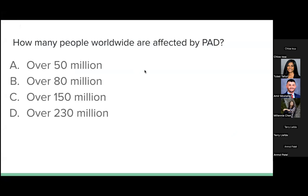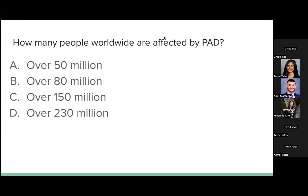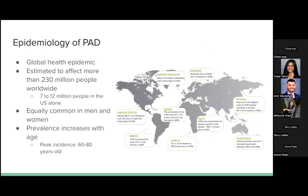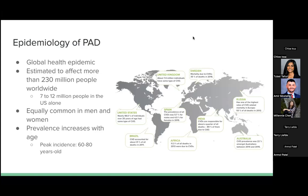First, a question for the audience: how many people do you think worldwide are affected by PAD? PAD is a significant global health issue affecting over 230 million people worldwide, including 7 to 12 million people in the U.S. alone. It equally affects men and women, and its prevalence increases with age, peaking among individuals aged 60 to 80 years old.